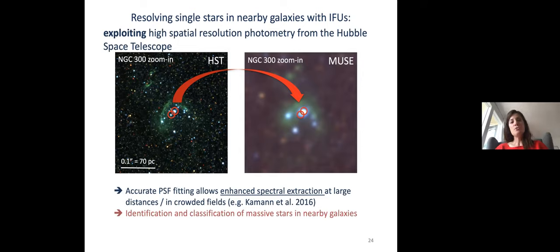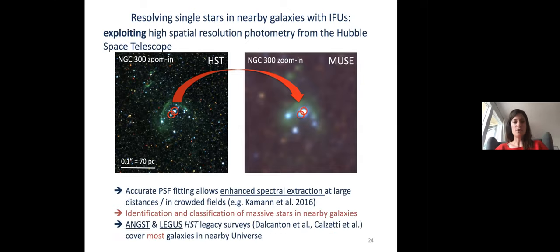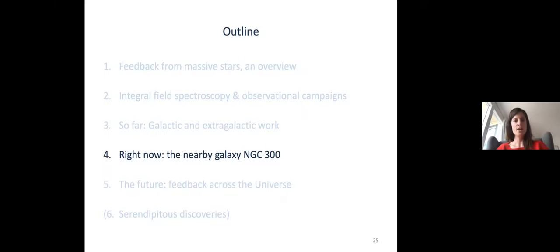This approach allows us to identify and classify massive stars in nearby galaxies from ground-based observations. HST surveys of nearby galaxies such as ANGST and LEGUS cover most nearby galaxies, and the field is now working on getting IFU data for the equivalent galaxies with HST coverage. NGC 300 at two megaparsecs is ideal because of its favorable inclination, and we imaged it with MUSE in about 35 hours of telescope time, giving us access to over 100 HII regions and their stars simultaneously.